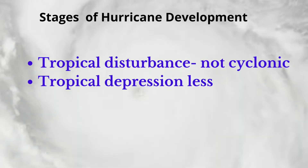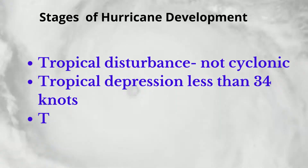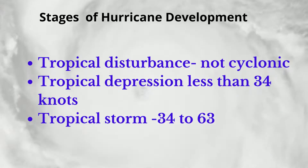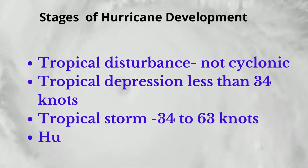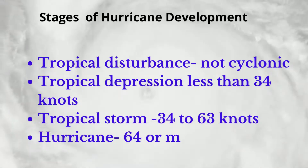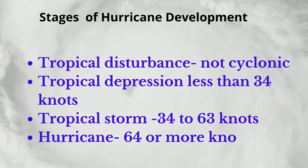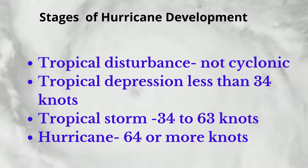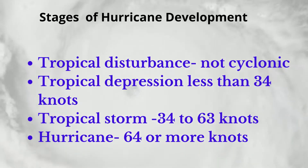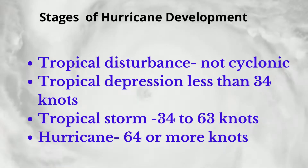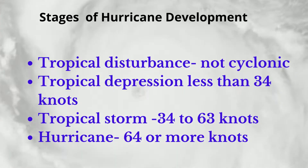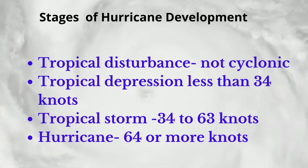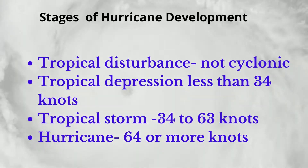Hurricanes develop in a number of stages. The first stage is a tropical disturbance, which is a moving area of thunderstorm that is not cyclonic.